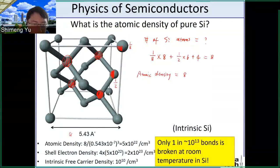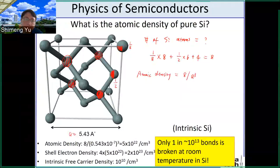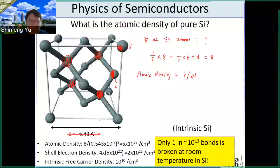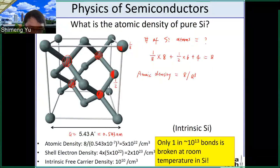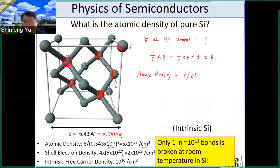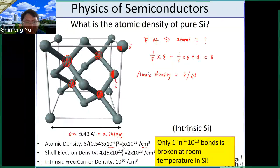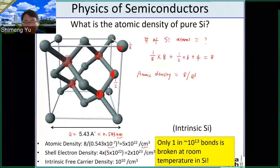The atomic density is this eight divided by the volume of this unit cell, which is the lattice constant a, and the volume is a cubed. You can convert units — one angstrom is one-tenth of a nanometer — and then convert nanometers to centimeters using the ratio 10 to the power of negative 7. If you do this calculation, you will get an atomic density of five times 10 to the power 22 per centimeter cubed.